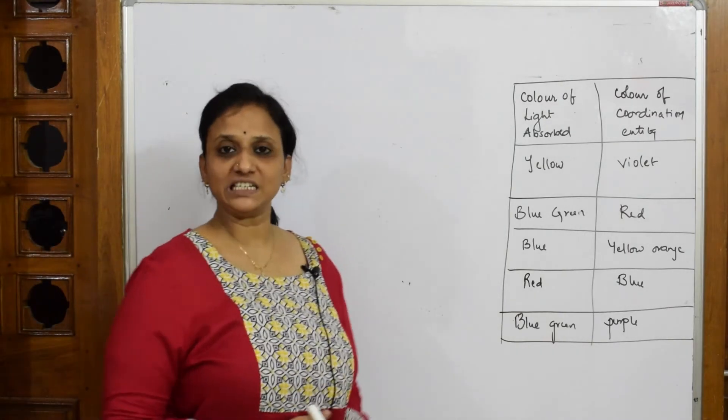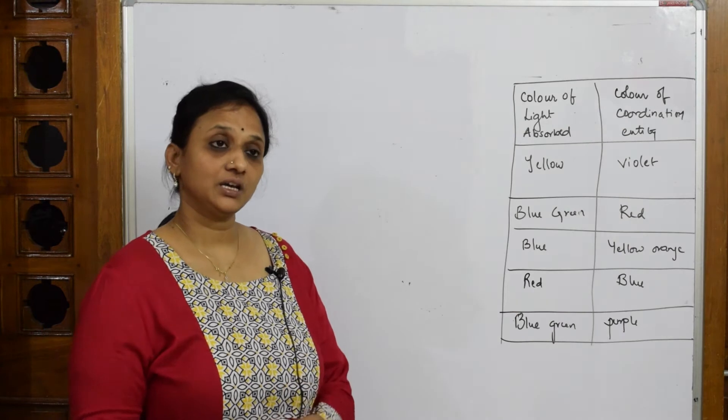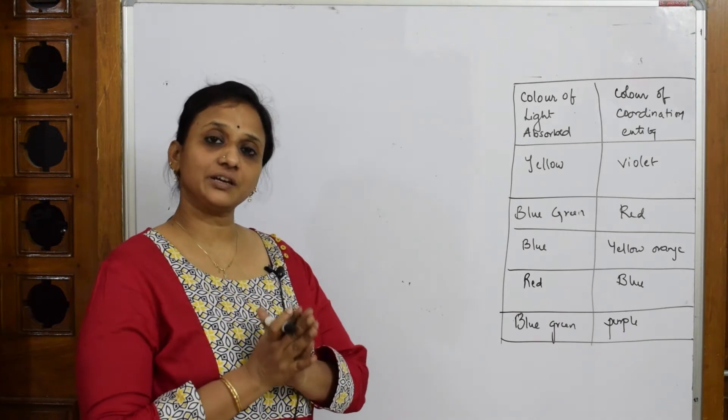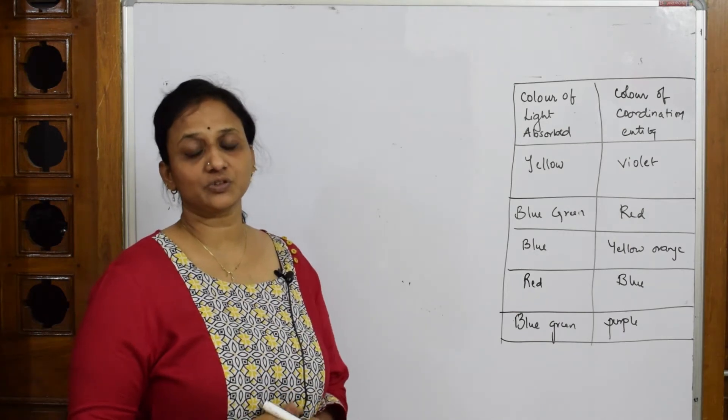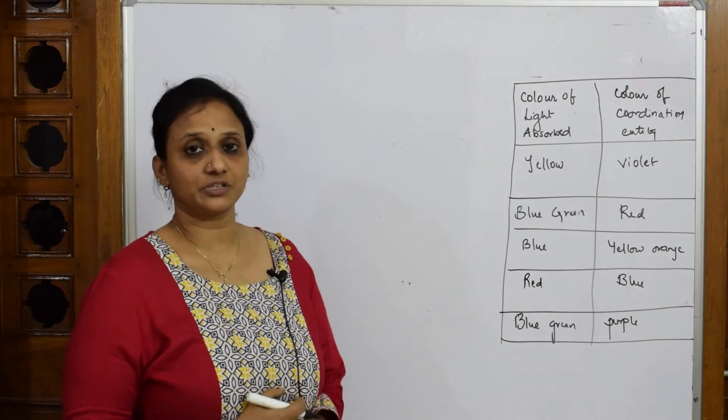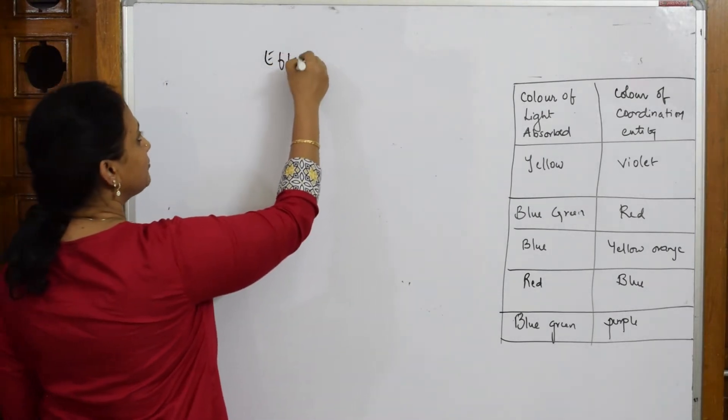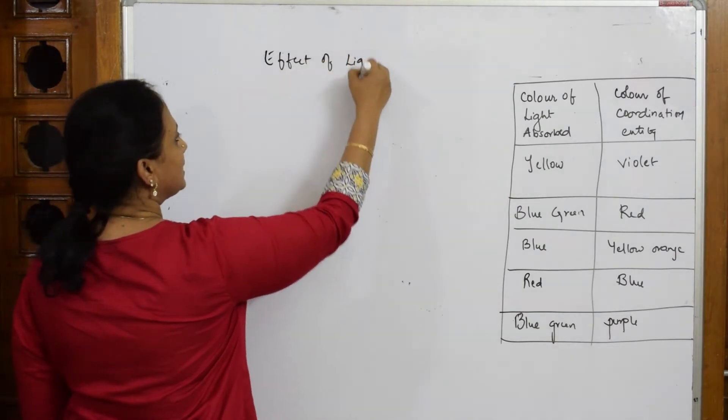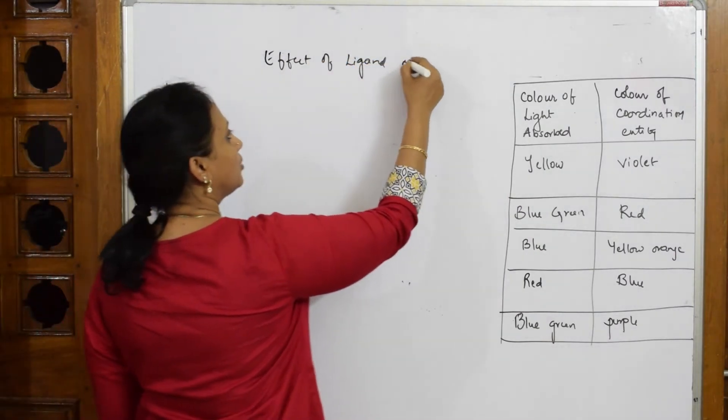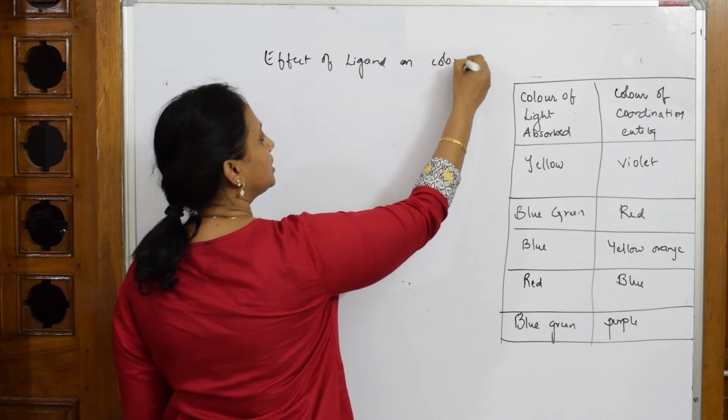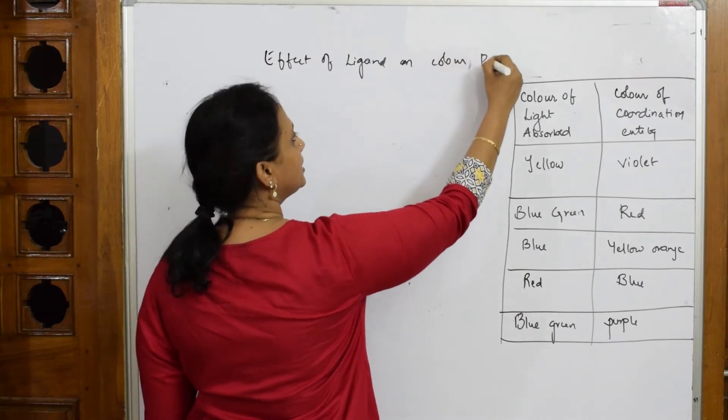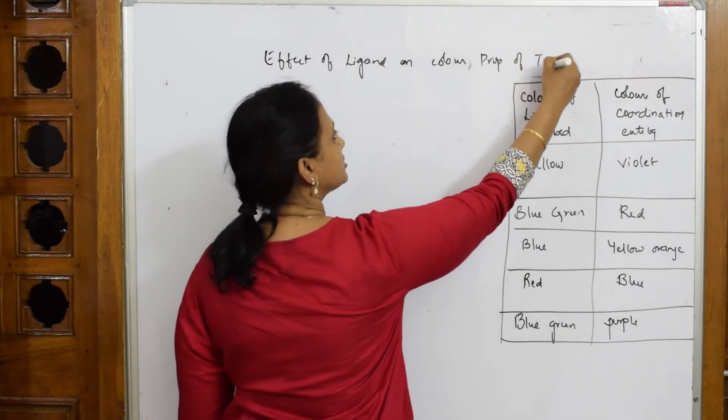Now, we have already seen what is meant by d-d transition. Now most important thing - we are going to see what is the effect of a ligand on the complex or the color of the transition elements. Let us write the heading: Effect of ligand on color property of transition elements.